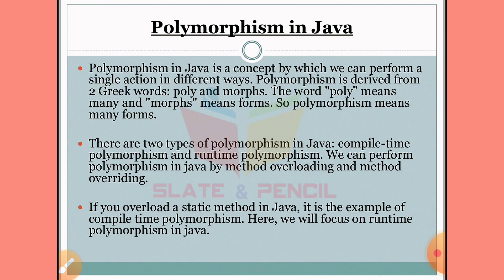Polymorphism is derived from two Greek words. Poly and morph. Poly means many, and morph means form or ways. So polymorphism means many ways — performing one task in different ways.